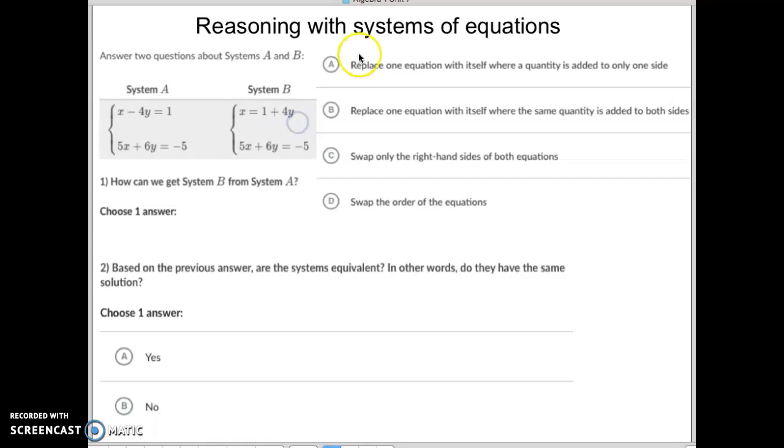So you've got to read the questions then. Letter A, did they replace one equation with itself where a quantity is added to only one side? No, because they added positive 4y actually to both sides on this one. So that's not it. But that should lead you to understand how easy it is to make a mistake. Did they replace one equation with itself where the same quantity is added to both sides? Yeah, and that's exactly what we're talking about. That is what they did.